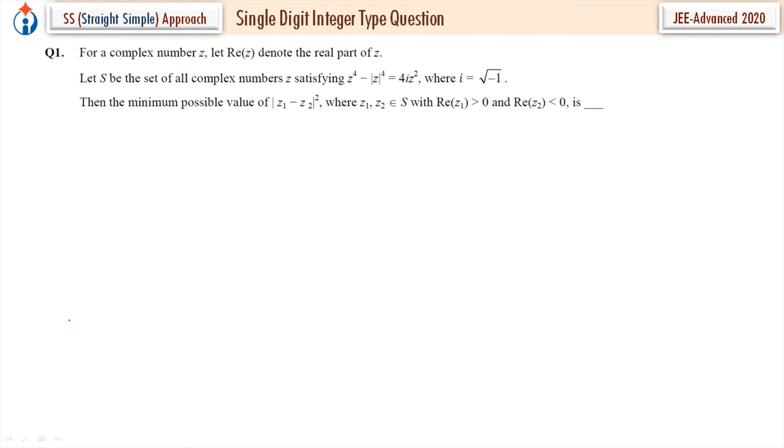Question number 1. Let's comprehend what is given. For a complex number Z, real part of Z denotes the real part of Z. Let S be the set of all complex numbers Z satisfying this equation.